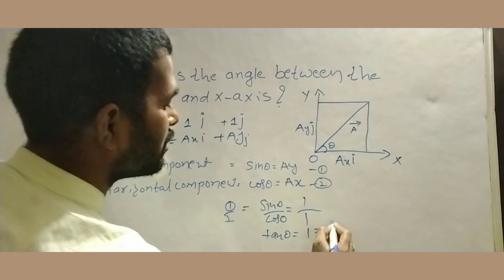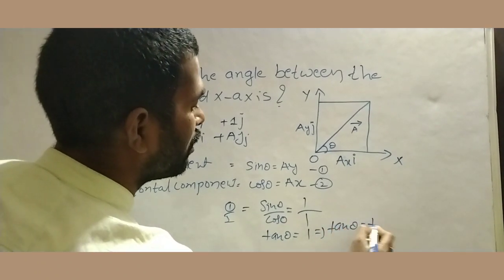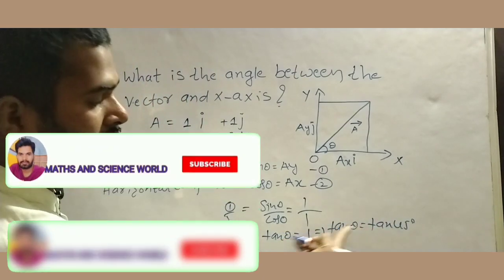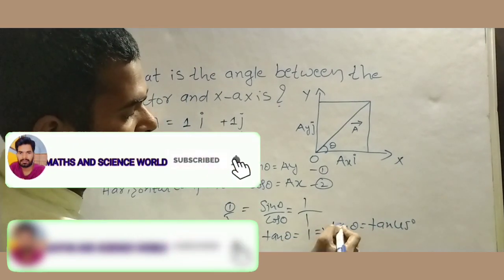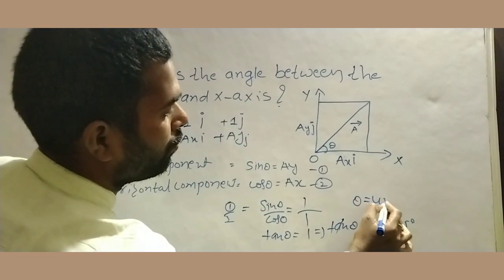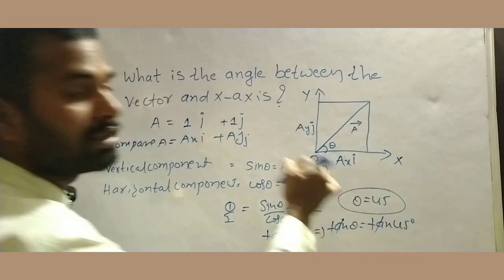Which implies tan theta equals tan 45 degrees. Tan 1 means tan 45. Your answer will be theta equals 45 degrees.